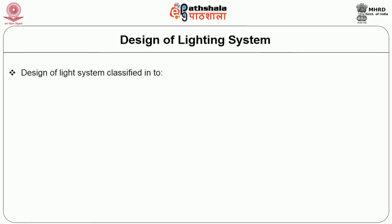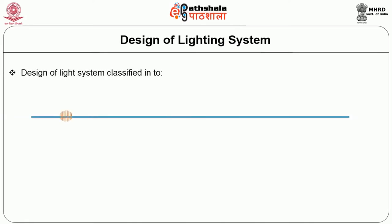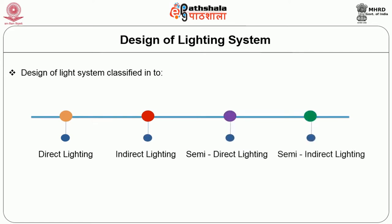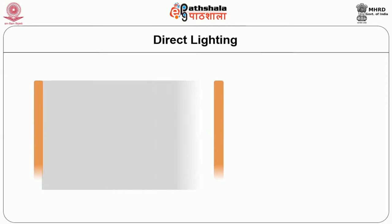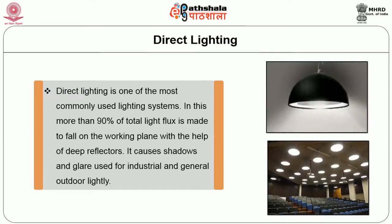Design of the lighting system: lighting systems are classified into direct lighting, indirect lighting, semi-direct lighting, and semi-indirect lighting. Direct lighting is one of the most commonly used lighting systems. In this, more than 90% of total light flux is made to fall on the working plane with the help of deep reflectors. It causes shadows and glare, and is used for industrial and general outdoor lighting.